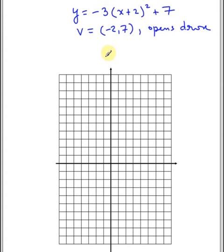So now let's determine our step patterns. Remember our original step pattern: 1, 3, 5, and so forth. So here it's going to be -3 times 1, -3. -3 times 3, -9. -3 times 5, -15. And so on, but I don't think we'll need more than that.